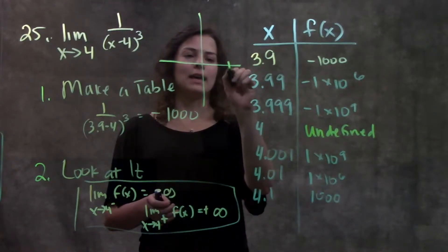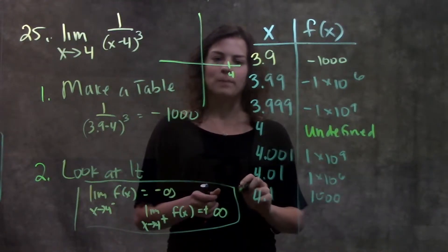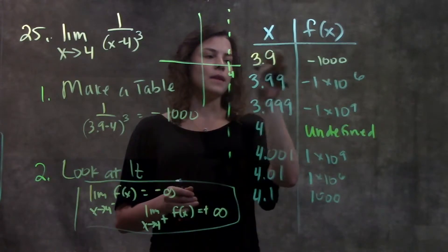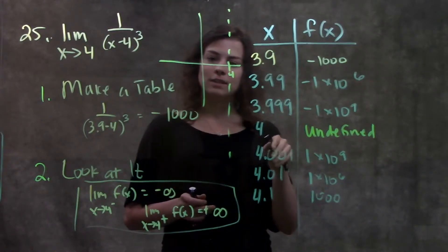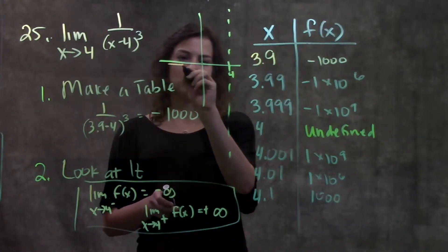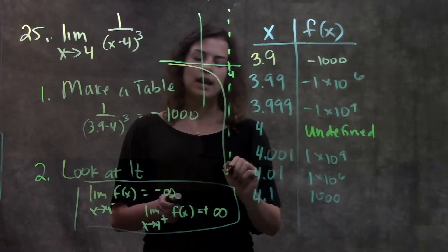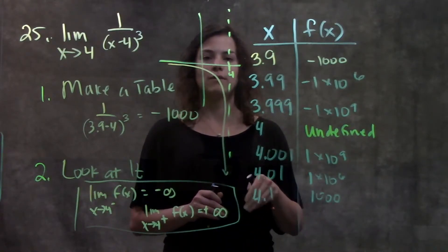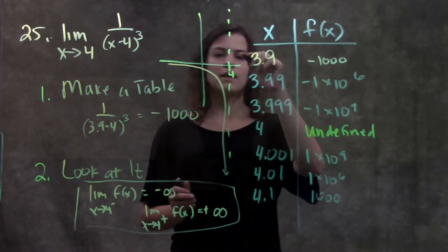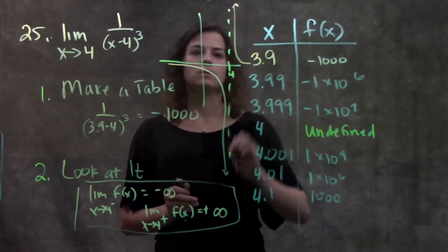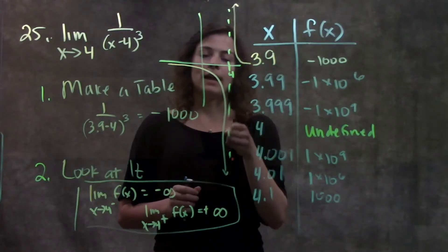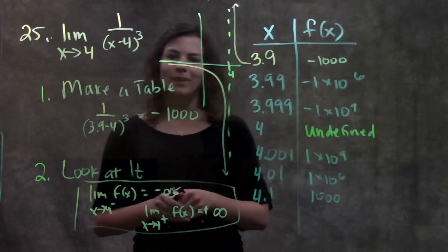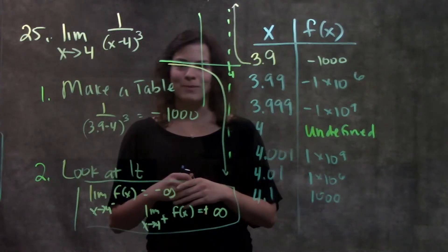On a graph what this would look like is, we have our x value 4 but here it's undefined, it's 1 over 0. That's going to be a vertical asymptote. From the left hand side our values are getting infinitely smaller so that's going to look something like this. It's going to hug the vertical asymptote, getting really close to it but never actually touches it. It goes down for infinity. And from the right hand side we're getting infinitely larger, so it's going to be going this way up on the asymptote. So the limit at x equals 4 doesn't exist but we do have left hand side and a right hand side limit. And that's about it for this problem. Hope that was helpful.